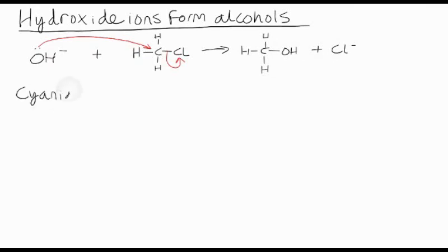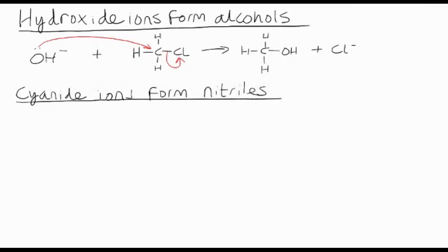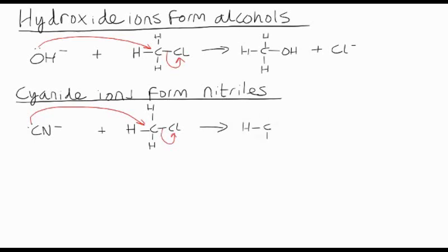Cyanide ions form compounds called nitriles. A cyanide ion is CN⁻, and it's the electron pair on the carbon that attacks the delta plus carbon of our haloalkane. Remember that curly arrow — stop short of the carbon and break the C-Cl bond. We then form a nitrile. Notice the carbon chain is now one carbon longer.